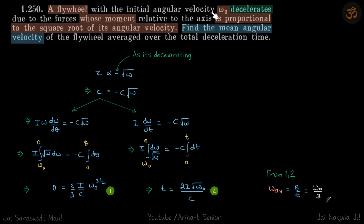We are given a flywheel with initial angular velocity omega_0 that decelerates due to forces whose moment is proportional to the square root of angular velocity. The decelerating torque is proportional to angular velocity.